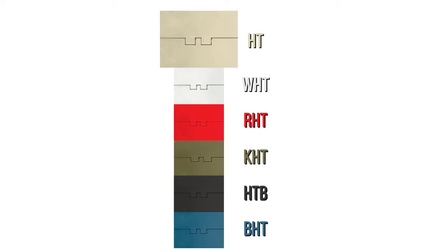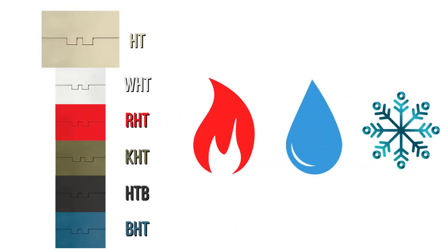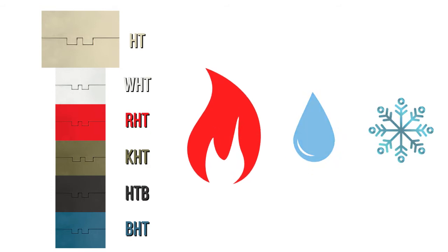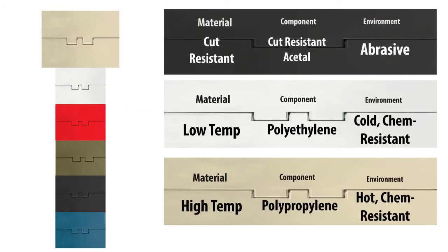The best way to determine the material of your matte top chain is by identifying the environmental factors the chain will be exposed to. Typically, high temperature applications will utilize our HT material. This table gives a quick overview of several types of environmental factors that may affect the choice of chain material.